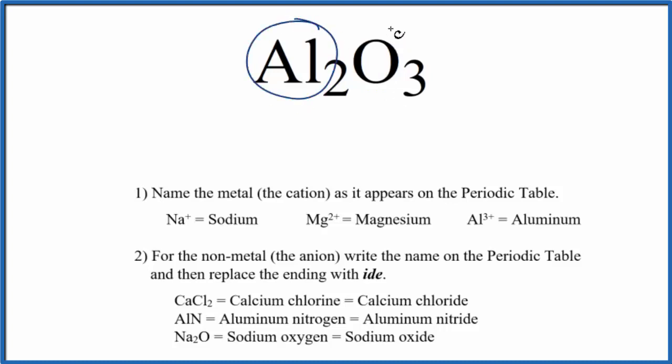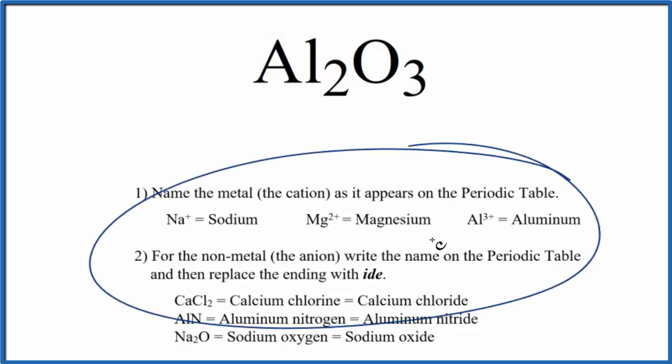Specifically here, we have aluminum and oxygen, two different elements. That makes this a binary ionic compound, and we use these rules here to write the name.